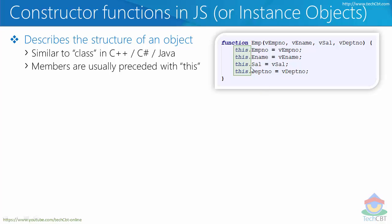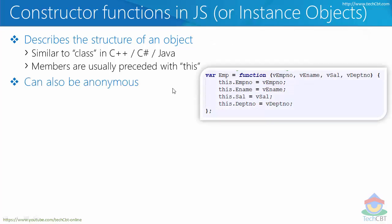The most important thing when using constructor functions is that each of those members has to be preceded with the `this` keyword. In a traditional JavaScript function you just have a function with a name, parameters, and instructions — declare variables, do some processing, and so on. However, in constructor functions, members which need to act as properties must be preceded with the `this` keyword.